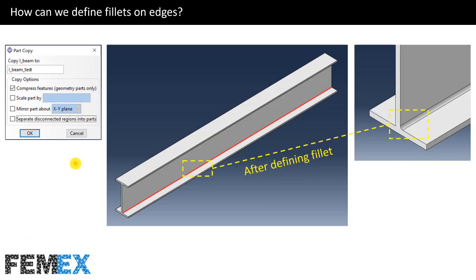Here I want to explain how to define fillets on edges. I want to use the solid part created in the previous video. Now I want to define fillets on this edge, and after defining fillets, our geometry will be like this. I will define a copy of the main I-beam and define fillets on it.